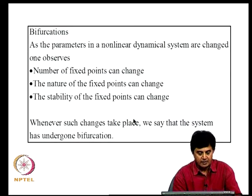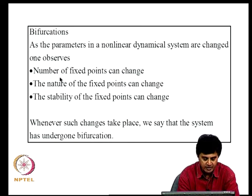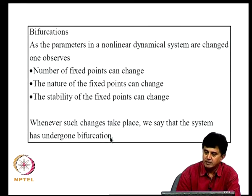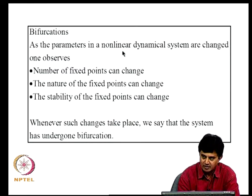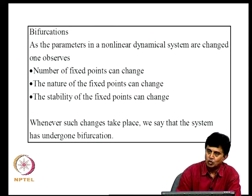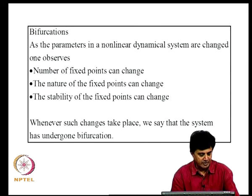We use the word bifurcation in relation to the number and nature of fixed points as parameters in a nonlinear dynamical system are changed. One observes that the number of fixed points can change, the nature of the fixed points can change, and the stability can change. Whenever such changes take place we say the system has undergone bifurcation. There is various nomenclature associated with bifurcations depending on the nature of fixed points before and after the bifurcation occurs.